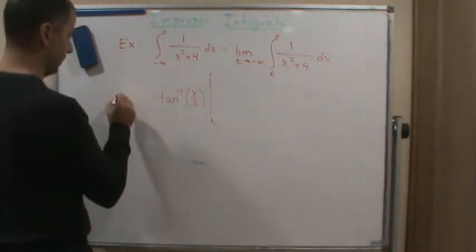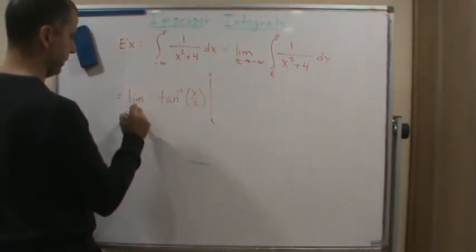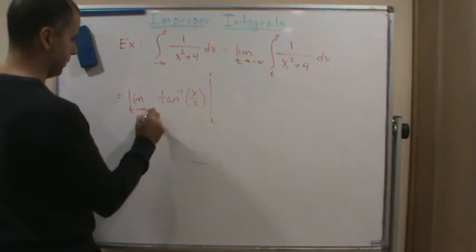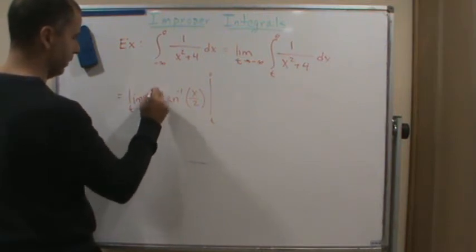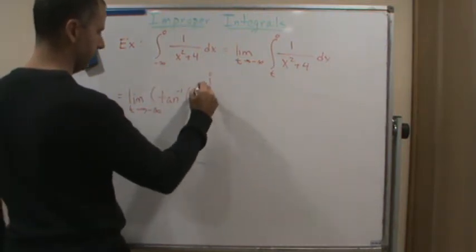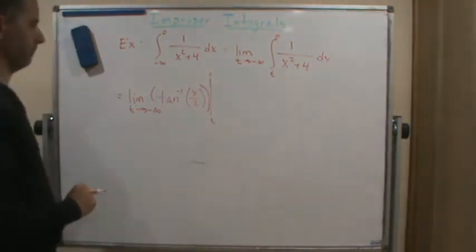Oh, forgot the limit. Let me write the limit here. So this is the limit as t approaches negative infinity of this.